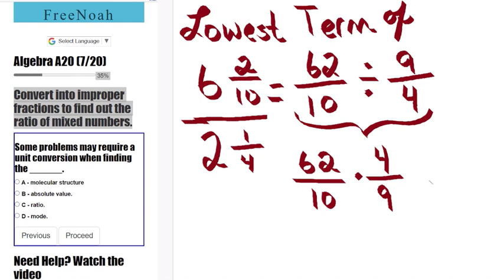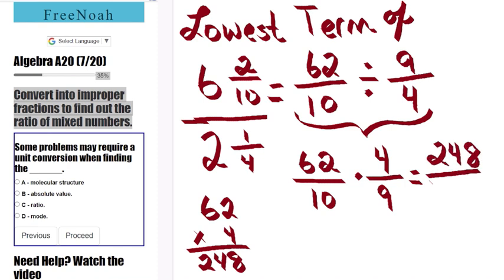Let's multiply here. We have 62 times 4. 2 times 4 is 8, 6 times 4 is 24. Our numerator here is 248. Now let's move to our denominator. 10 times 9 is 90. So we're left with the new ratio of 248 to 90.